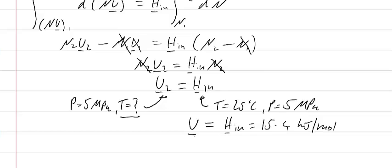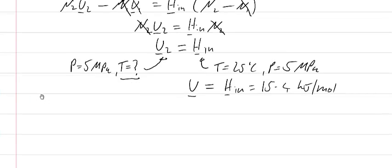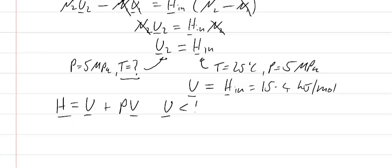And so to do that, or what ends up happening is that because the enthalpy is equal to the internal energy plus pressure times volume, then at a given temperature U is always smaller than enthalpy. So if I'm at the same pressure then, I have to increase the temperature to get to the same internal energy as enthalpy. And so as you'll see in the NIST video, the temperature where the internal energy is equal to 15.4 kilojoules per mole is equal to 52 degrees Celsius.